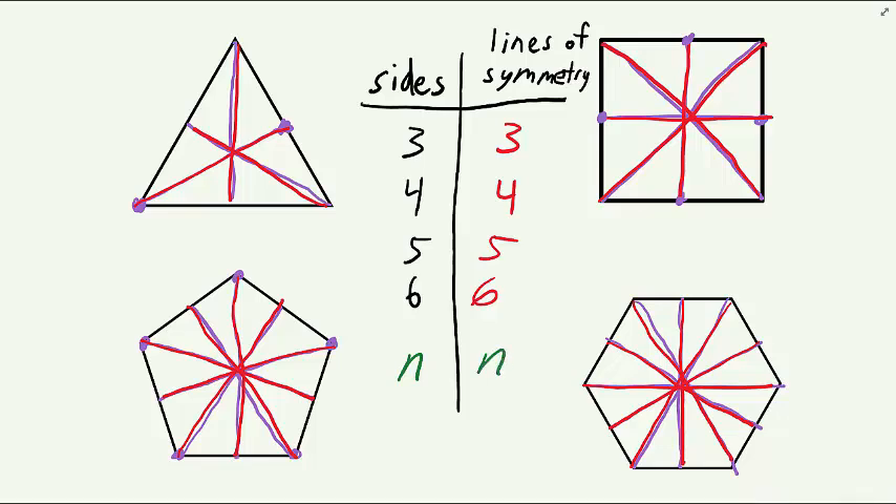So if we were asked how many lines of symmetry a regular triacontagon has, that's a polygon with 30 sides, or we could call it a 30-gon. From what we have seen here, we can conclude that a regular 30-gon has 30 lines of symmetry.